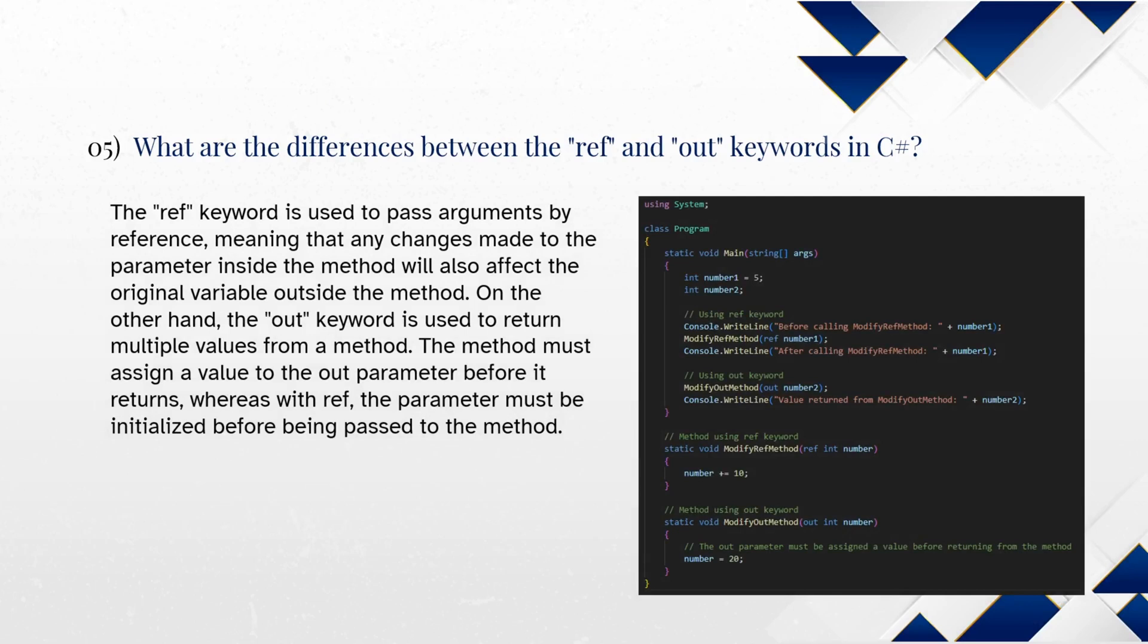The ref keyword is used to pass arguments by reference, meaning that any changes made to the parameter inside the method will also affect the original variable outside the method. On the other hand, the out keyword is used to return multiple values from a method. The method must assign a value to the out parameter before it returns, whereas with ref, the parameter must be initialized before being passed to the method.